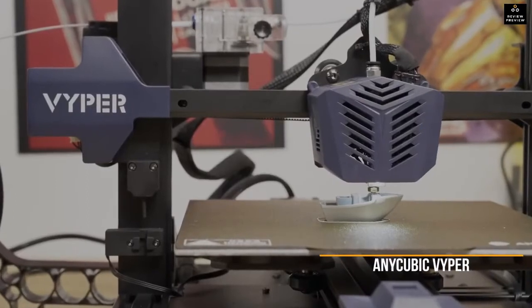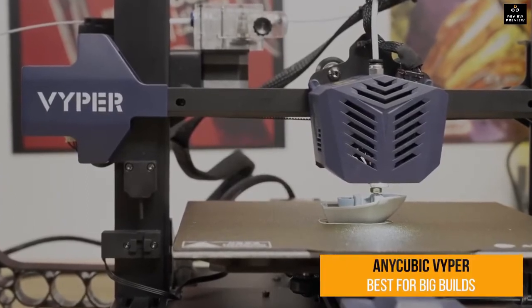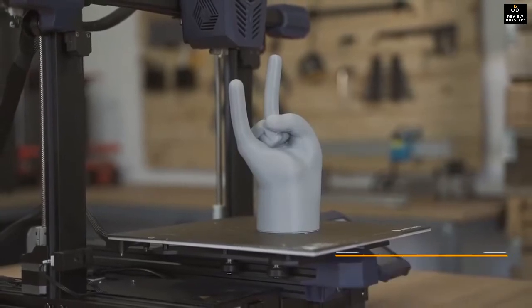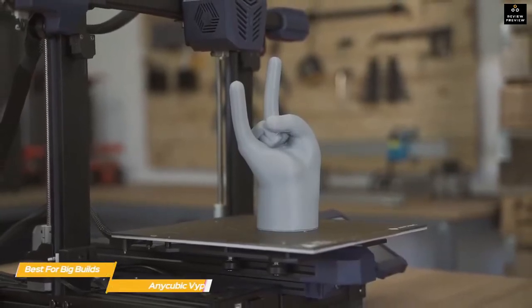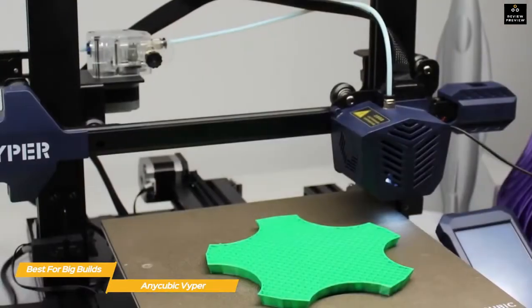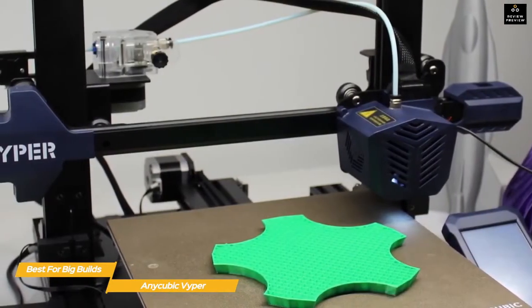Next up, the Anycubic Viper, our pick for best budget 3D printer for big builds. The Anycubic Viper's open-frame design lets you whip up large 3D prints and provides automatic print bed leveling to make the entire process much easier. Best of all, it comes at a budget price point that you'll definitely find appealing.